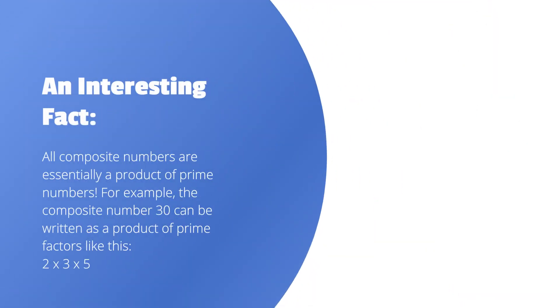An interesting fact: All composite numbers are essentially a product of prime numbers. For example, the composite number 30 can be written as a product of prime factors like this: 2 times 3 times 5 is equal to 30.